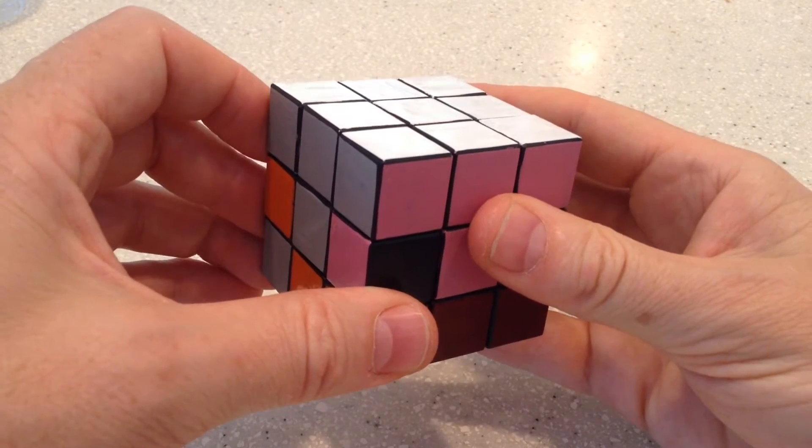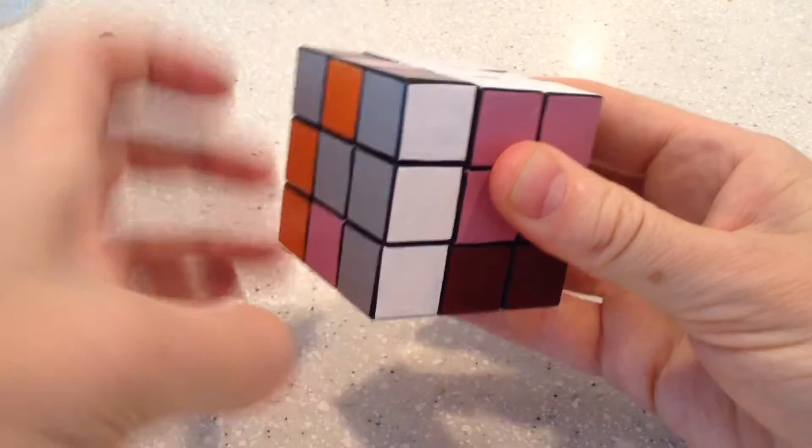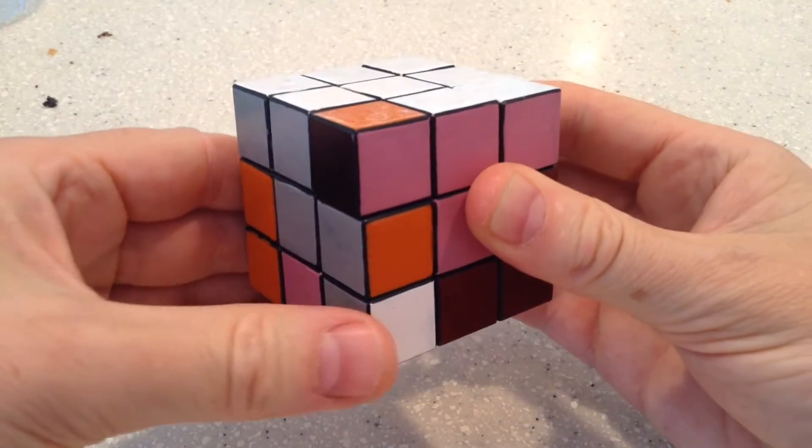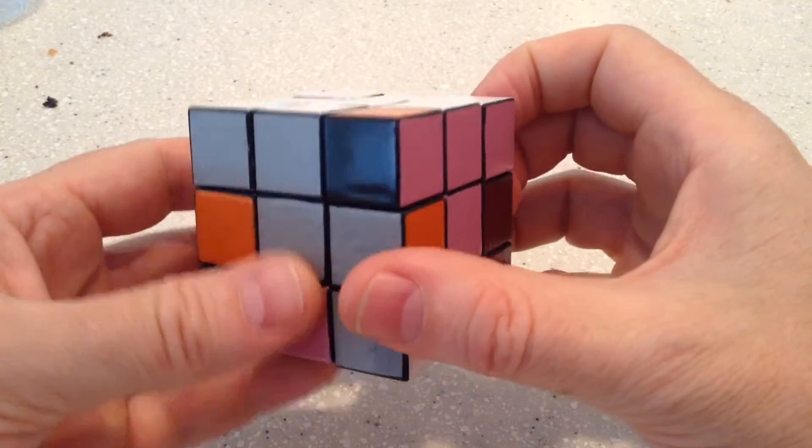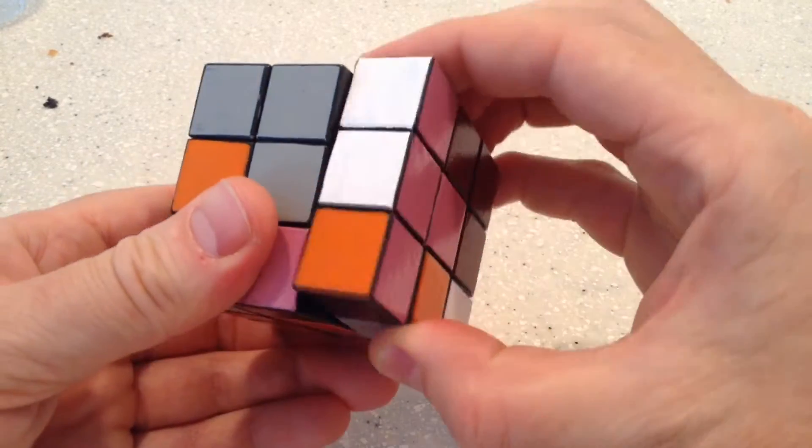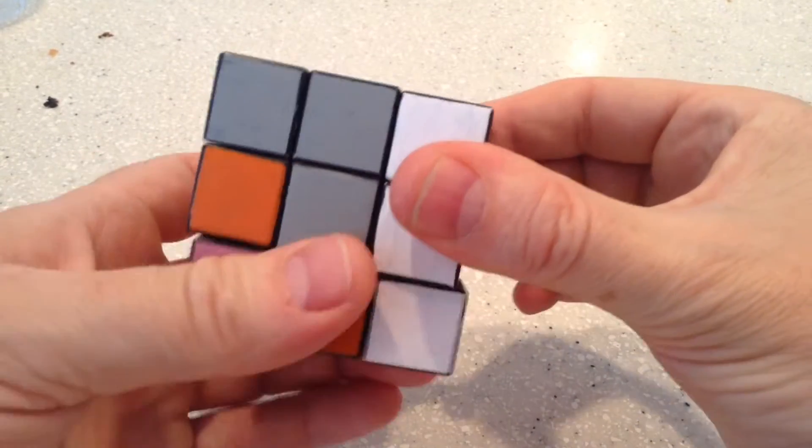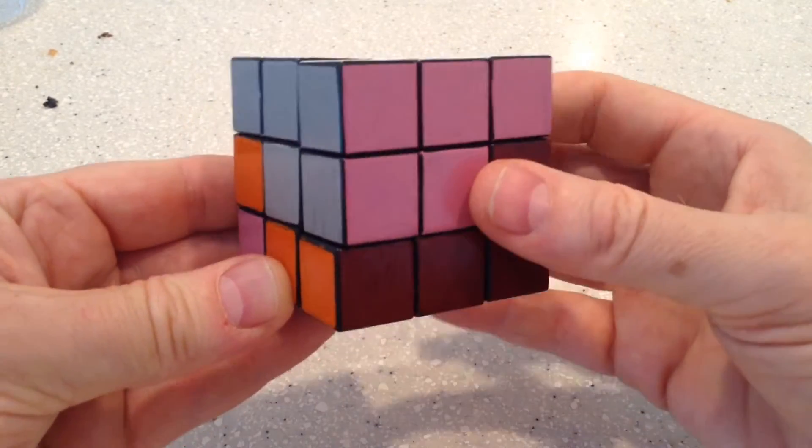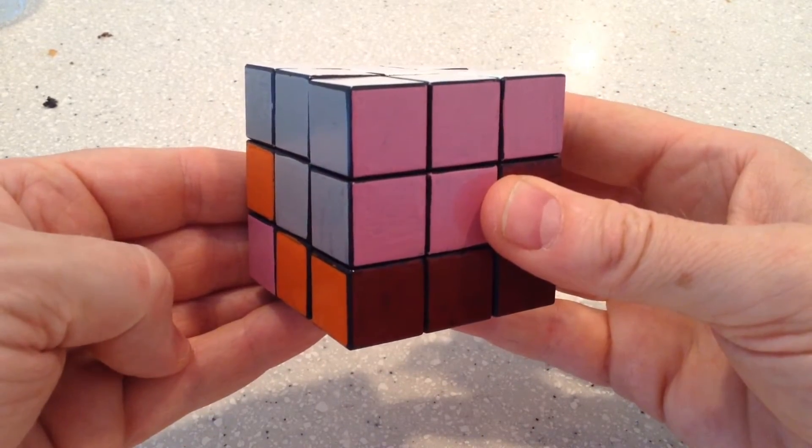So, we perform this move, which takes the white piece out, brings it back to this position, and then we put it in place using this move, and there we have that piece in place.